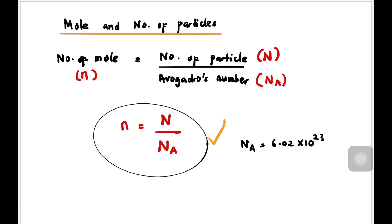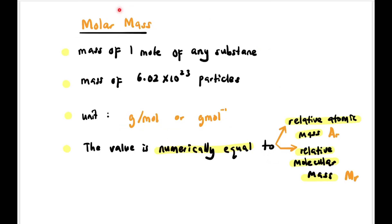Now let's talk about molar mass. Molar mass is the mass of one mole of any substance—the mass of 6.02 × 10²³ particles. The unit is gram per mol. The value is numerically equal to relative atomic mass Ar or relative molecular mass Mr, it's just that they have a unit.